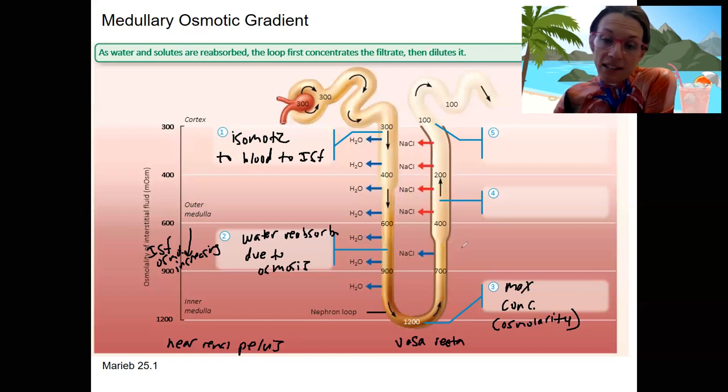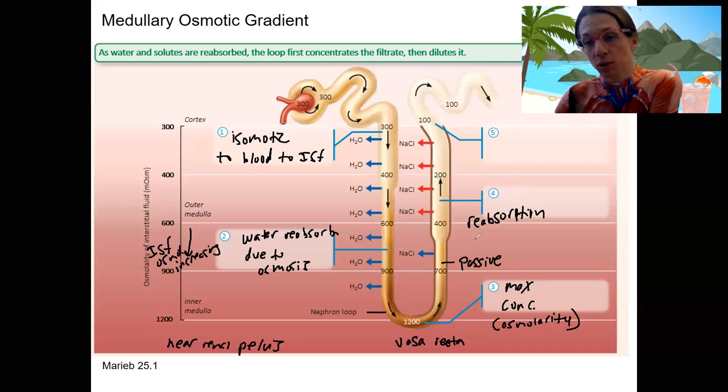As we ascend up the ascending loop, we're going to have the reabsorption of salts. That's going to occur both through passive transport down the electrochemical gradient of those solutes. As we go up and have decreasing medullary osmotic concentration, there is a drive for those solutes out. There's also a drive for water in, but that's not going to happen. We don't have aquaporins there. That's what the nephron loop is for, otherwise we'd get dehydrated.